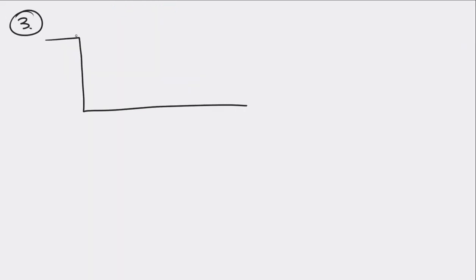In the next one, a projectile is launched from the top of a 50-meter cliff. At launch, it moves at 30 meters per second. What is the projectile's speed when it is 20 meters above the ground?